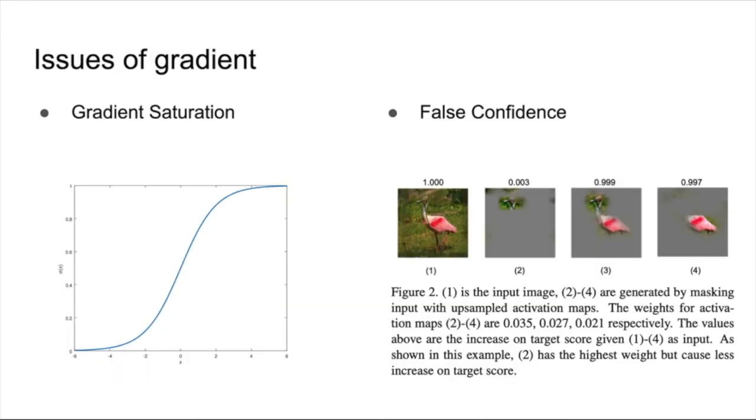However, in our work, we find that there exist two potential problems of gradient-based approximation. The first is gradient saturation, which means that when the intensity of a feature exceeds a certain level, it will not increase the confidence of network decision-making, and at this time, the gradient of the feature will be very small. Some methods such as integrated gradient aim to solve this problem, but it seems that it does not work well in CAM.